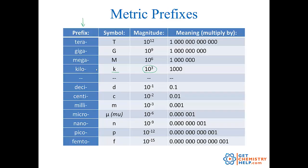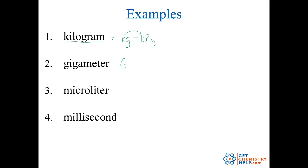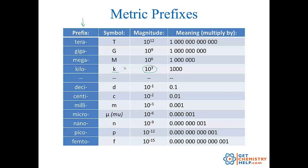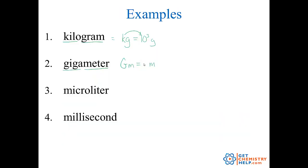How about gigameter? Okay, giga is capital G. So capital G. How about meter? Well, meter is lowercase m. So a gigameter is capital G, lowercase m. Well, what does that mean? How many meters is that? Well, giga is ten to the ninth. So a gigameter is ten to the ninth meters. So giga means ten to the ninth.